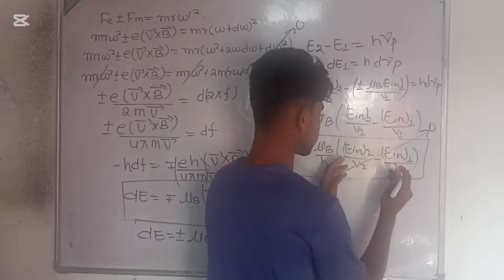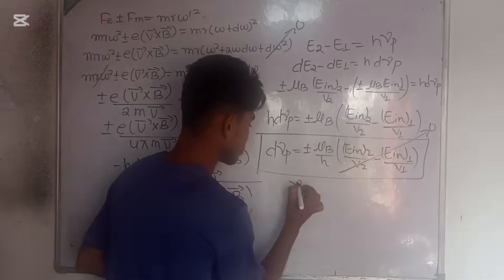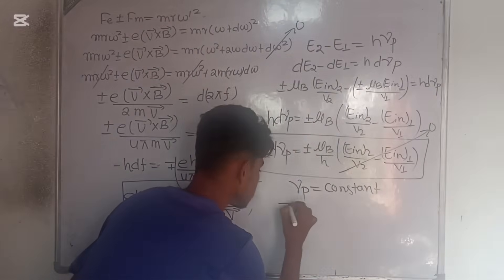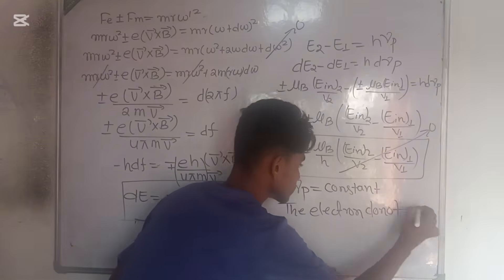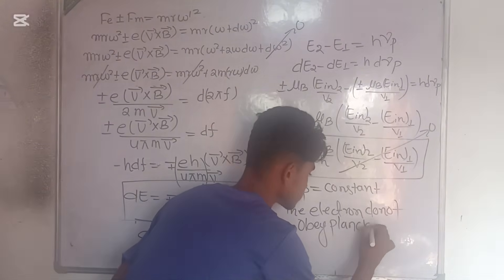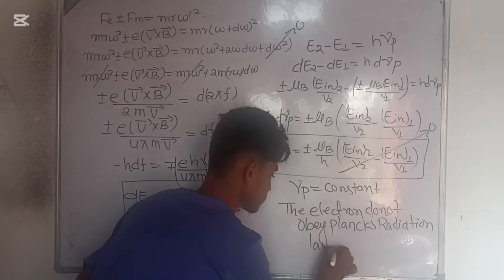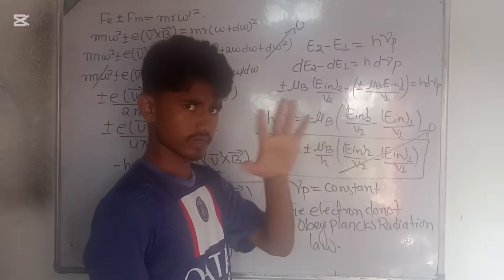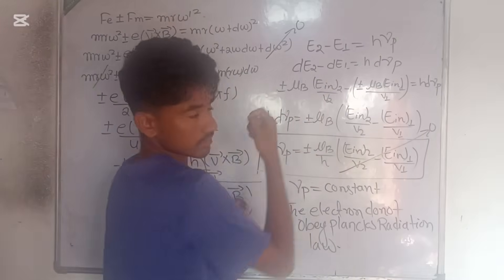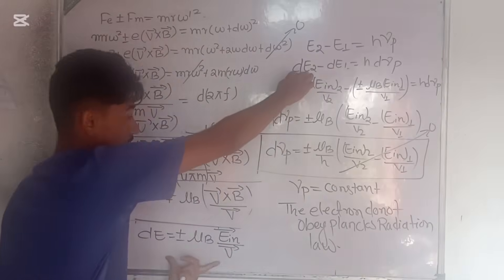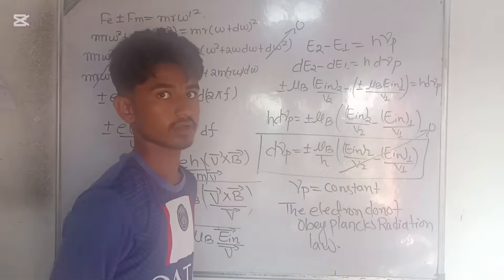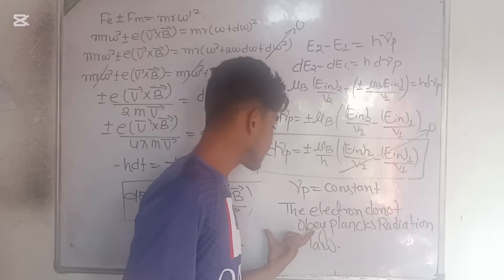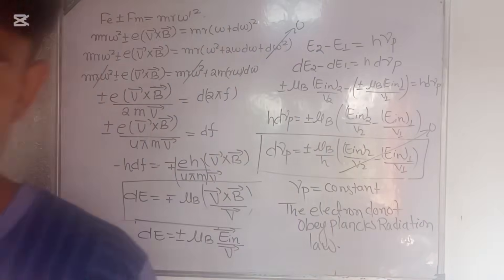If this whole term — the difference in the two induced electric field terms — comes out to be zero, you will again end up getting a constant frequency of photon. Then you can make a very beautiful assumption: that the electron does not obey Planck's radiation law. This is my idea of the frequency shift of the photon. Because of the magnetic field, there will be a shifting energy in the second orbit equivalent to one term and in the first orbit equivalent to another, and if this difference is also zero, then the electron does not obey Planck's radiation law. Thank you and bye.